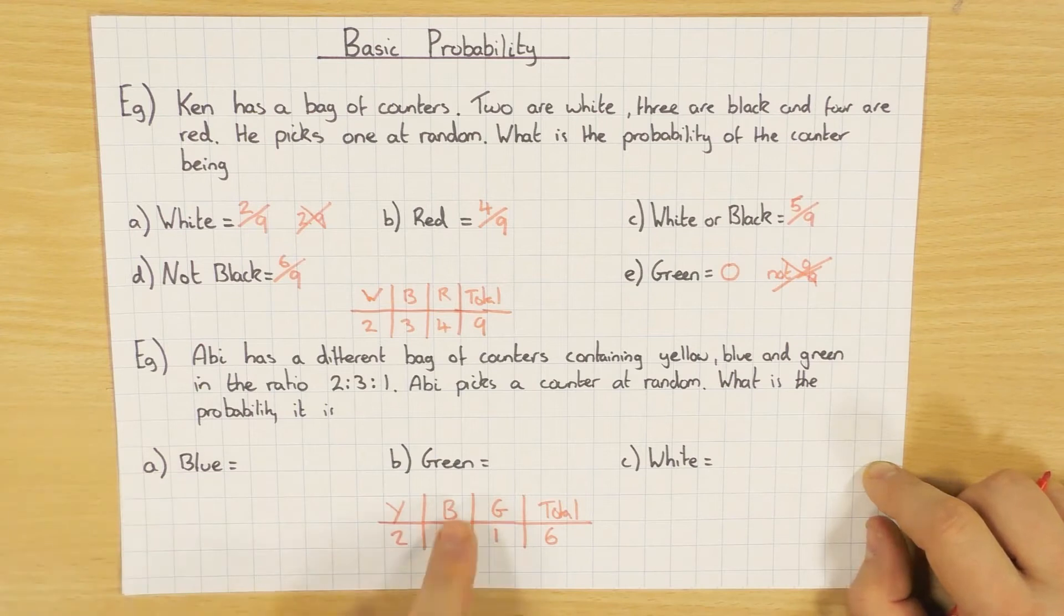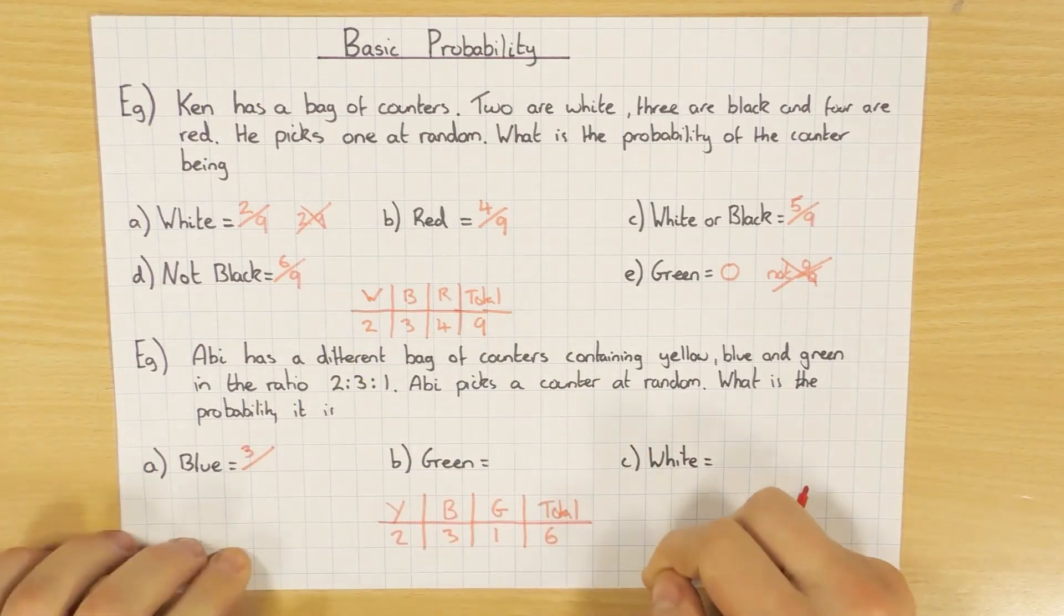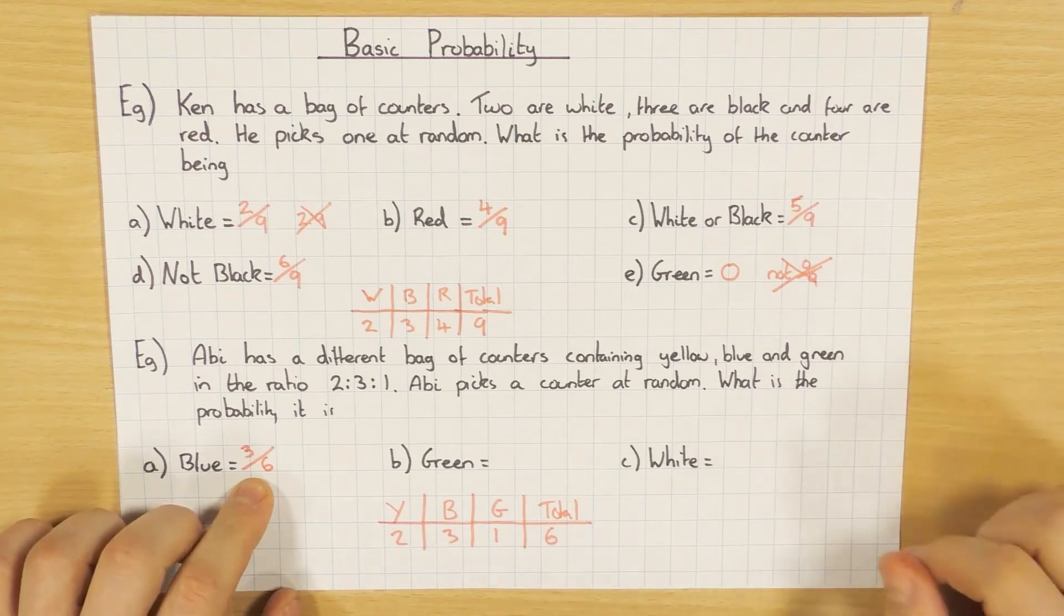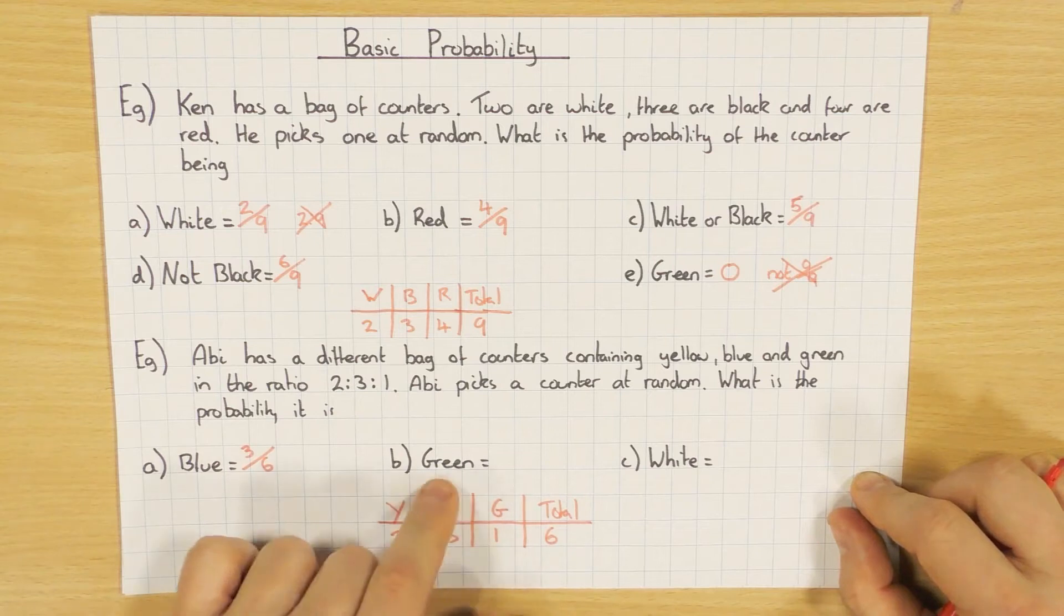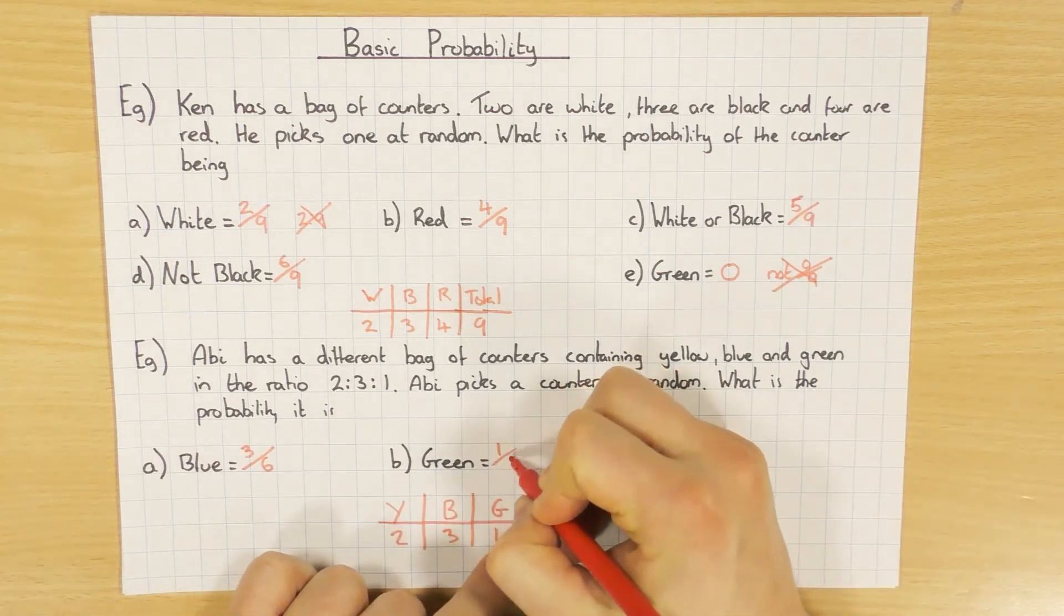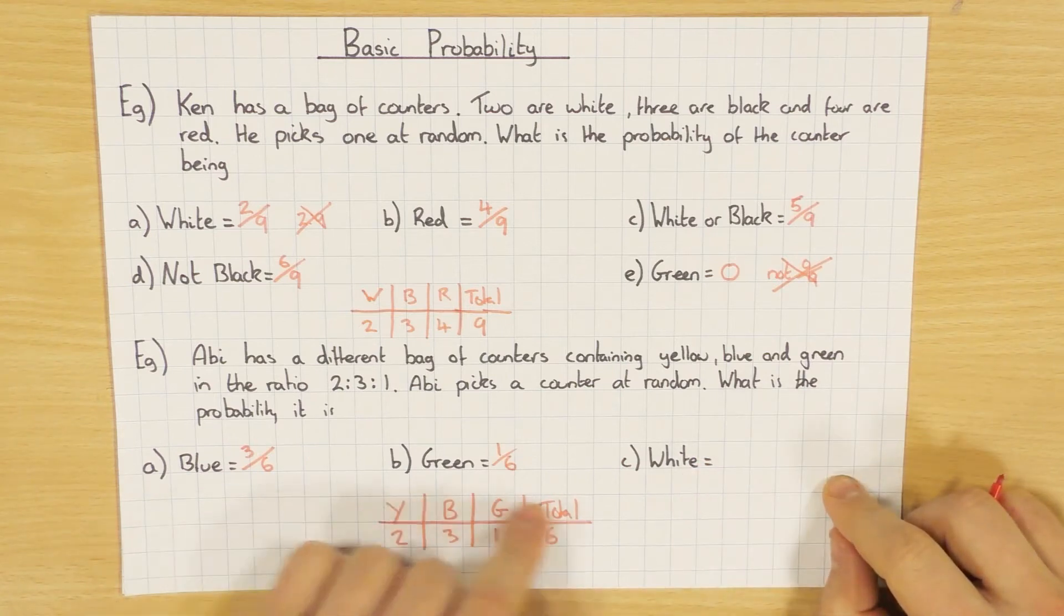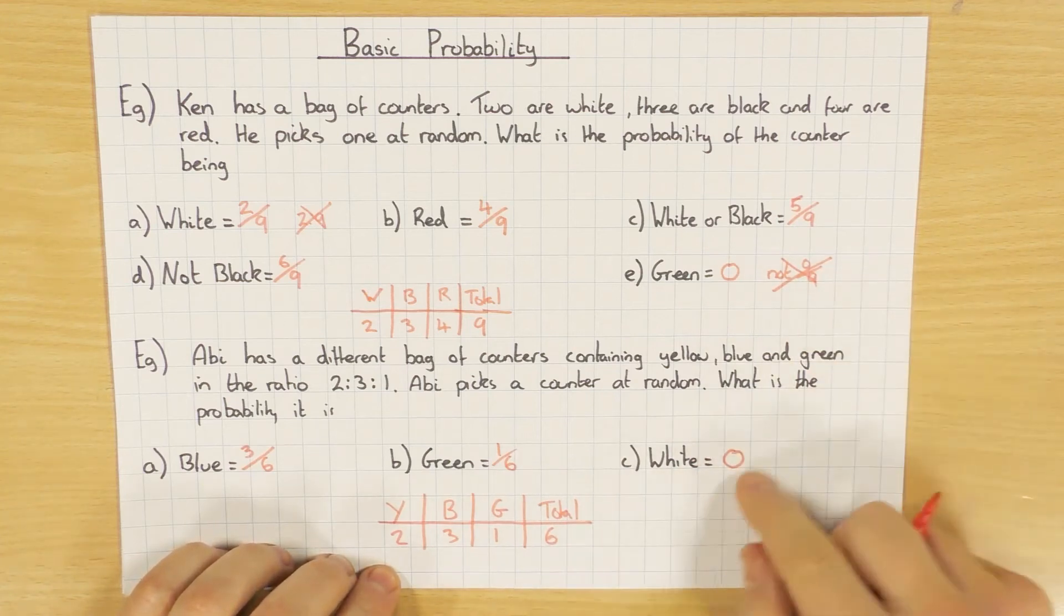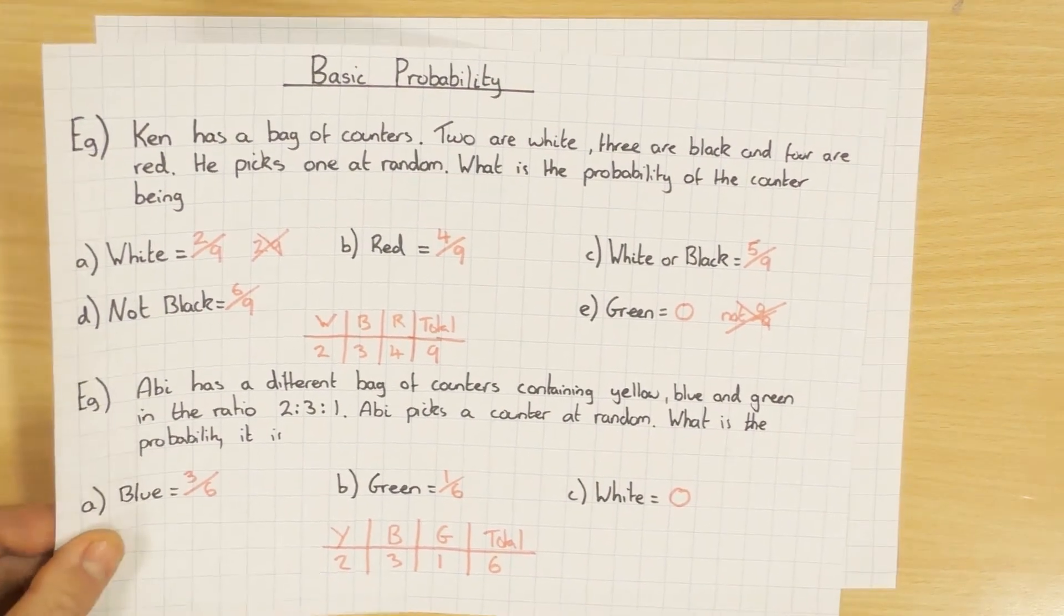So what's the probability of choosing a blue? Well, there's three blue out of a total of six. Now you can simplify your fractions if you want. Personally, I wouldn't when it's dealing with probability. But of course, if the question says to simplify, just make sure you do. Green - what's the probability of getting a green? Well, there's one green out of a possible six counters. And finally, what's the probability of getting white? Well, as you can see again, there's no white. So it's zero chance, not zero over six. It's just zero.